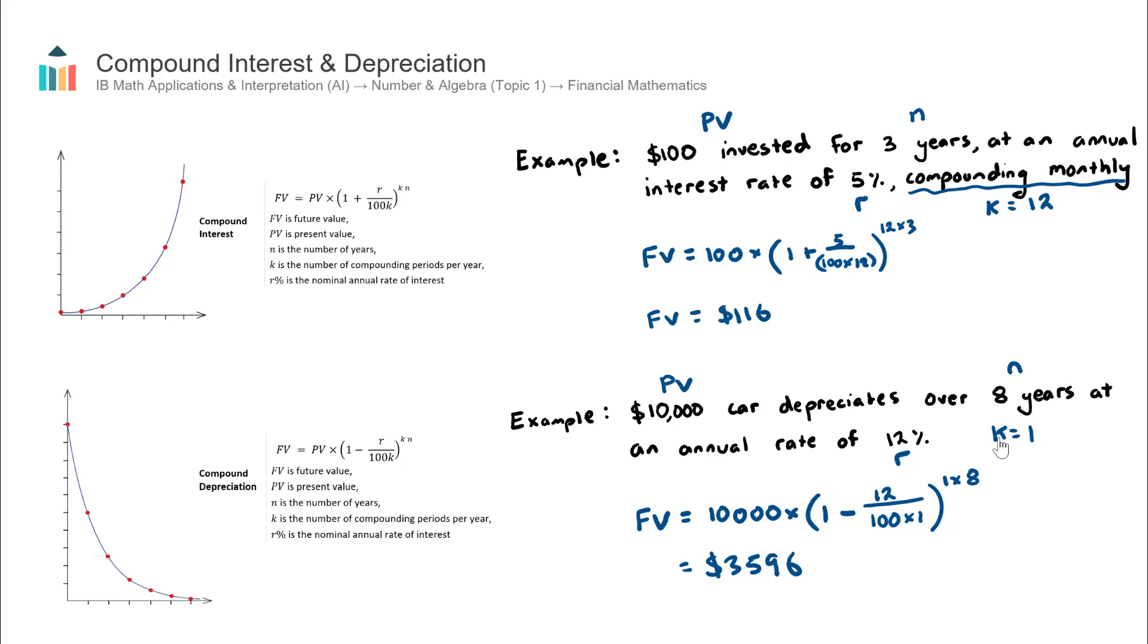That concludes our two examples. Before I wrap up, I just want to talk about the shape of these two graphs here, because I think it's a very important concept to understand. Let's firstly talk about compound interest. You can see here that it quickly increases over time, as opposed to going up in a straight line manner.